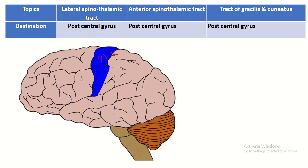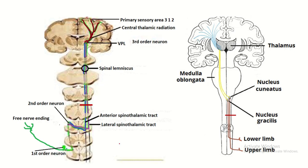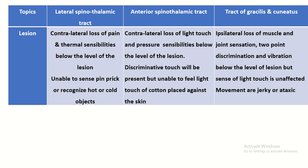Now what happens in the case of lesions? If there is a lesion in any part of this tract, the sensation of the opposite side fails to reach this location — so the lesion effect is always contralateral. But if the lesion occurs here, the sensory loss occurs at the ipsilateral site.